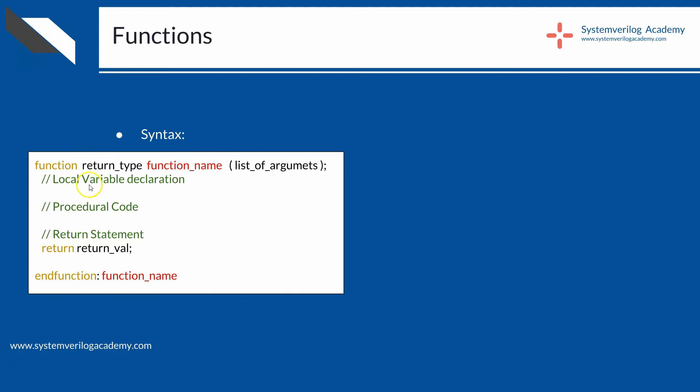In the body of the function, first you declare all variables used in the function other than the arguments passed. Next is the functional part, which is procedural code. Within a function you can write all types of code similar to what you can write in an always block, but without the always keyword. In fact, functions and tasks are another type of procedural block in Verilog and SystemVerilog, similar to always, always_comb, initial, and final blocks.